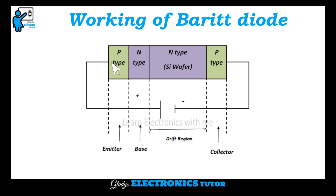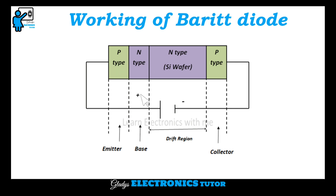Let's see about the working of BARITT Diode. It has PN and N2 diodes back to back. This N-type is larger than the other PN N-type. This is the emitter, this is the base, this is the drift region, and this is the collector.